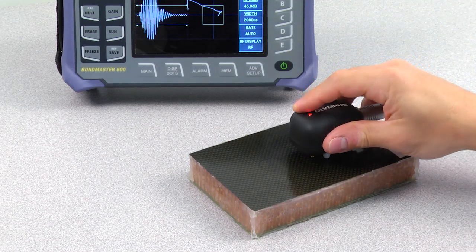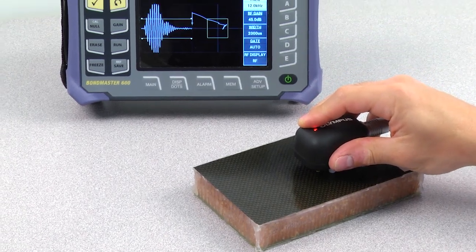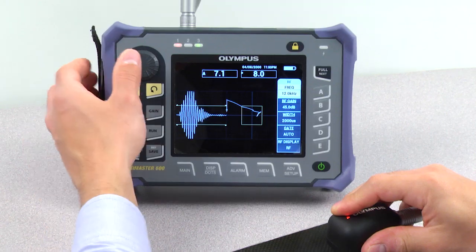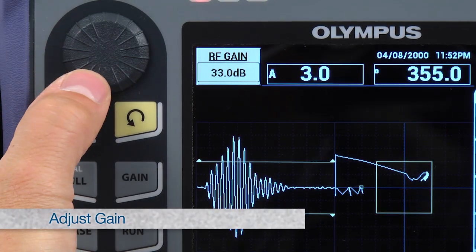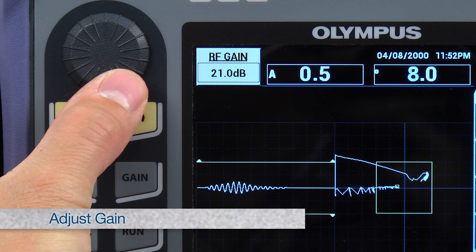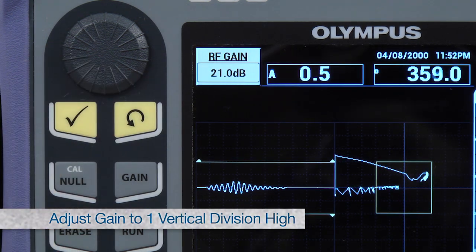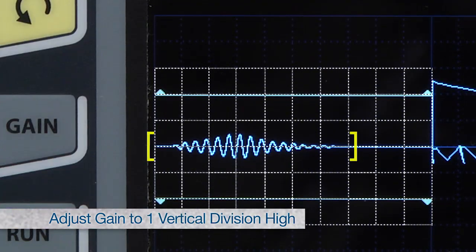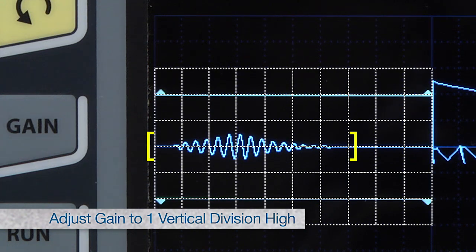Put the probe on an area free of defects on the standard and maintain the probe tips over the area. Press the gain key. Adjust the gain so that the RF signal does not exceed two vertical divisions high. A total of one division high is generally a good start.